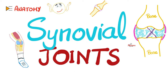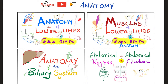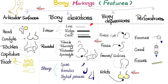Why do we call them synovial? Because we have a capsule lined on the inside by synovial membrane, which secretes synovial fluid that lubricates the joint. A joint is an articulation between two bony surfaces. Before watching this video, please watch the video titled 'Bony Markings or Features.' You'll need to focus on the articular surfaces of bones because this can determine the type of the joint.